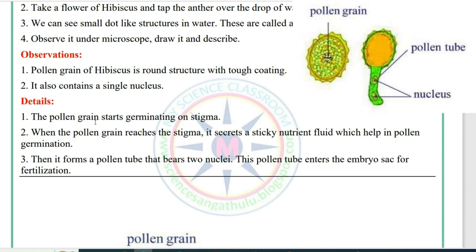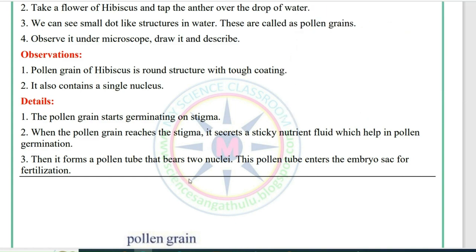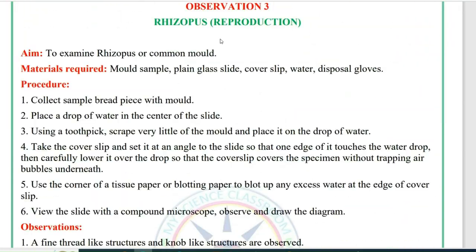Details: The pollen grains start germinating on the stigma. When pollen grains reach the stigma, it secretes a sticky nutrient fluid, aiding pollen germination. It then forms a pollen tube that bears two nuclei. This pollen tube enters into the embryo sac for fertilization.